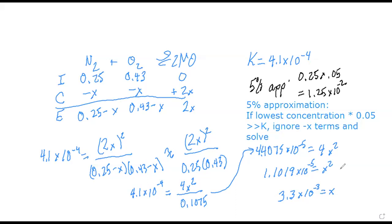We cannot use the 5% approximation all of the time. If our K value is considerable — certainly if it's greater than one, but even if it's a low negative exponent like 10⁻² or 10⁻³ — we're going to have to go through the quadratic in those cases. But if our K value is small and our initial concentrations are somewhat big by comparison, we can save ourselves a lot of time by ignoring the negative-x terms and using the 5% approximation.